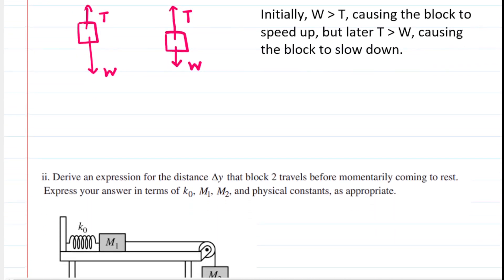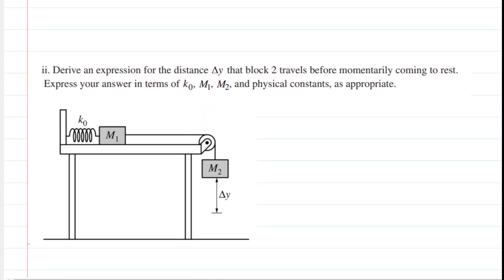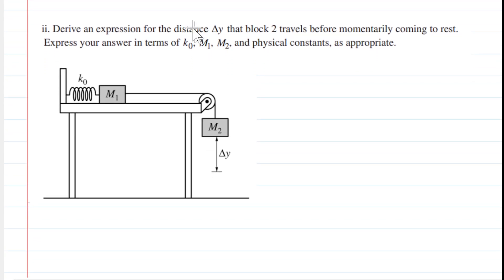But now we move on to part two of this question, which asks us to derive an expression for the distance delta y that Block 2 travels before momentarily coming to rest. Now, there's no friction in this system, so we're going to be able to use the conservation of energy, in which we say that the initial energies present are going to equal the final energies present.